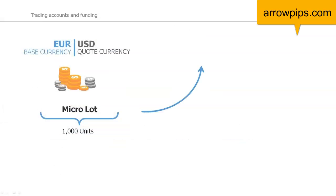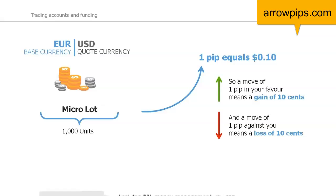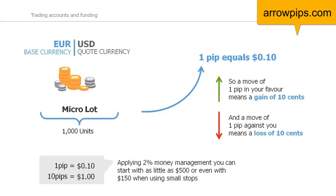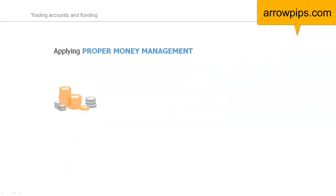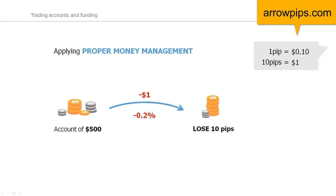So when trading with a micro lot, if the trade moves 1 pip in your favor, you gain 10 cents. If the trade goes against you by 1 pip, you only lose 10 cents. This means that a loss or win of 10 pips amounts to $1. Therefore, in order to trade with a micro lot, someone can start trading with as little as $500, or even $150, if the trade has a sufficiently small stop.